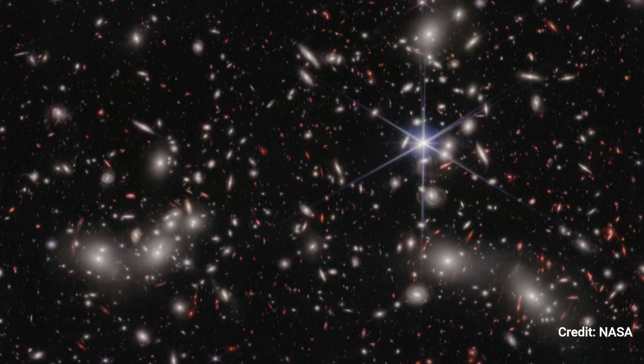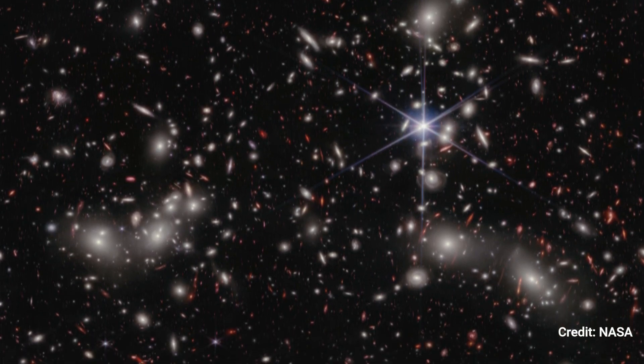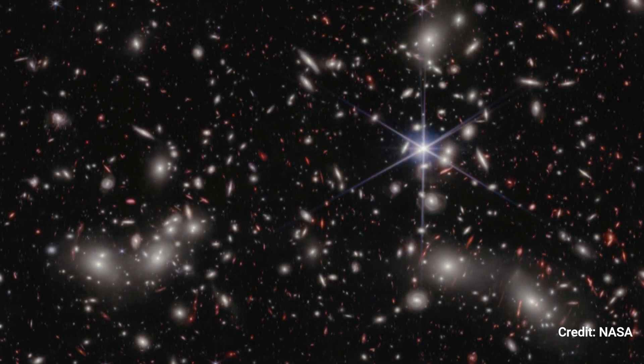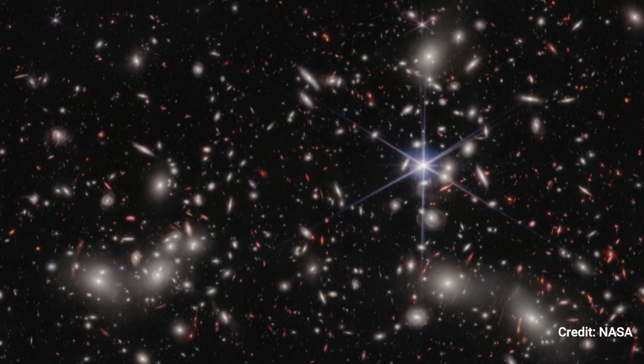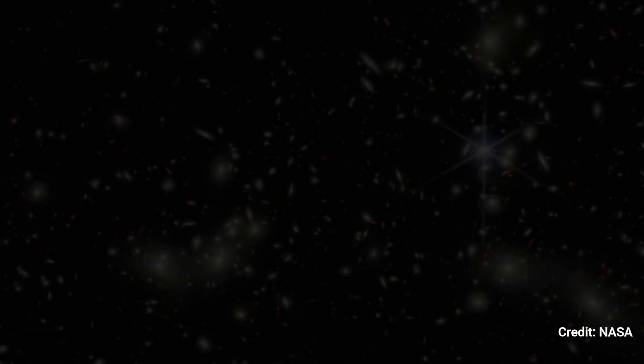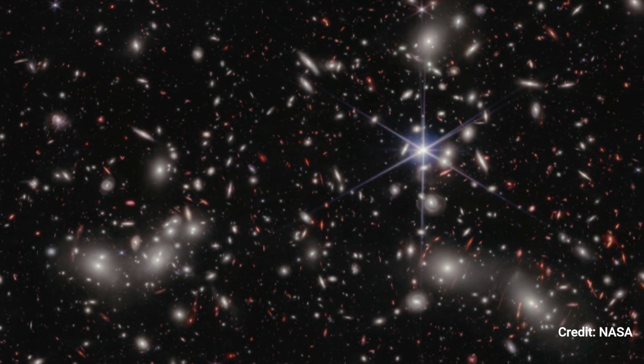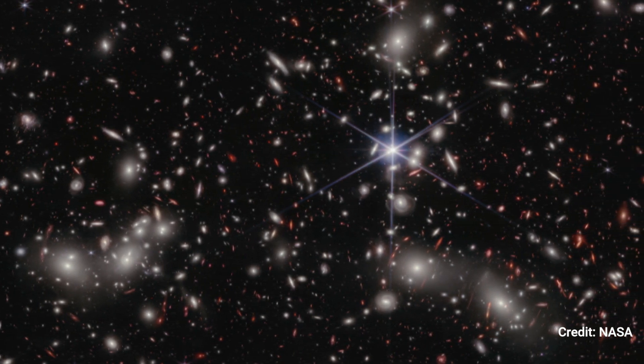To the right of the picture center, a foreground star in our own galaxy shows Webb's unique diffraction spikes. The galaxies of Pandora's Cluster, a conglomeration of already massive clusters of galaxies merging to form a megacluster, are bright white objects surrounded by a hazy haze.